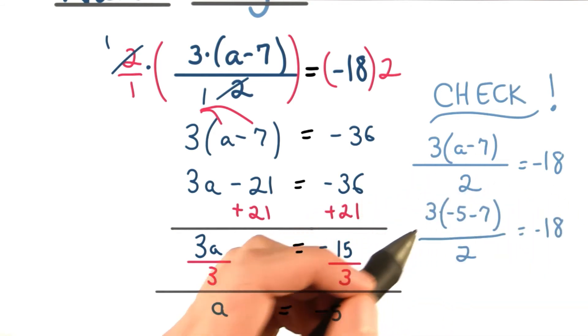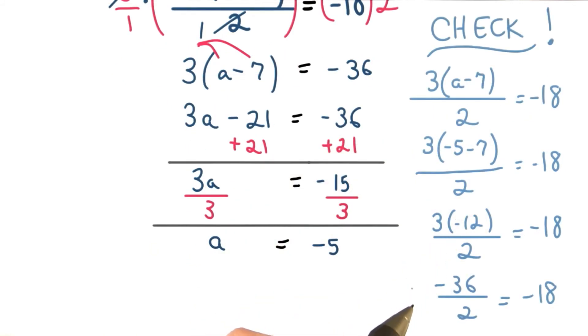Negative 5 minus 7 is negative 12. 3 times negative 12 is negative 36, and negative 36 divided by 2 is negative 18. So our answer a equals negative 5 does check.